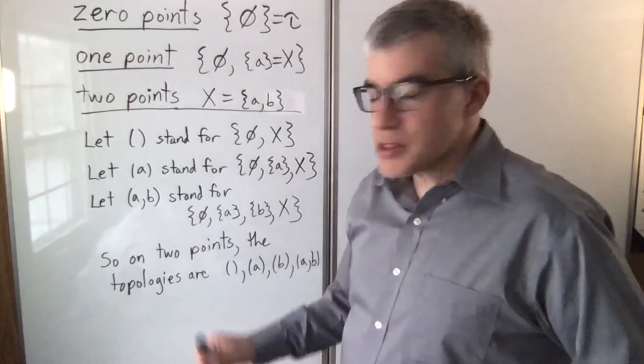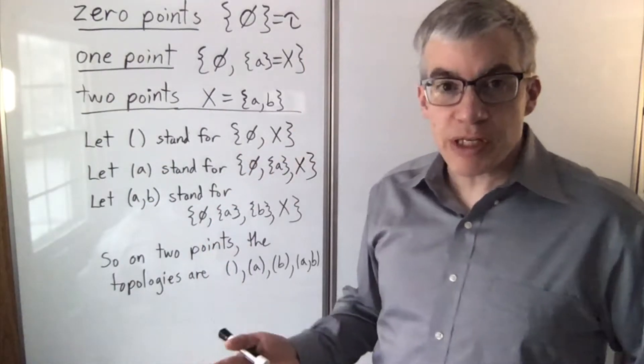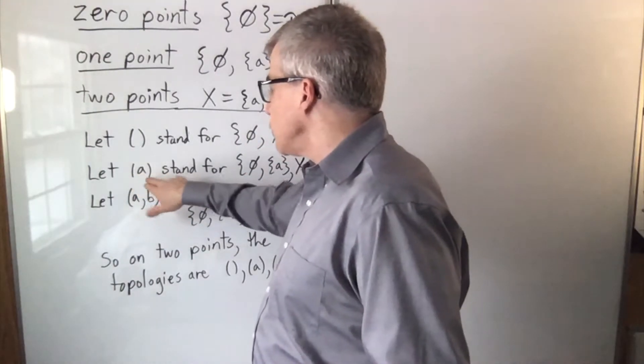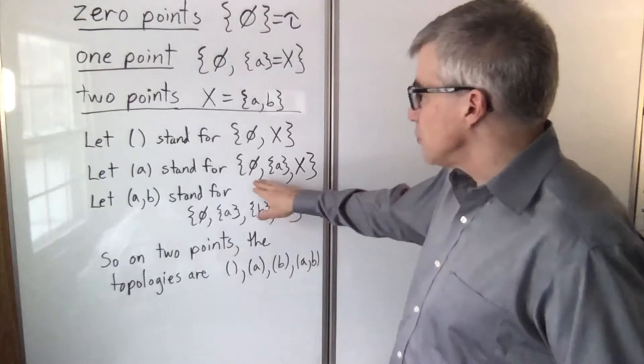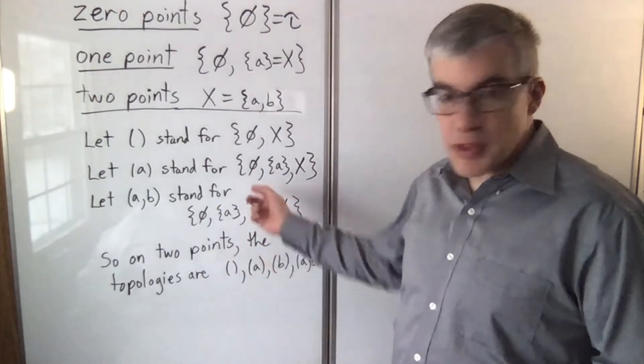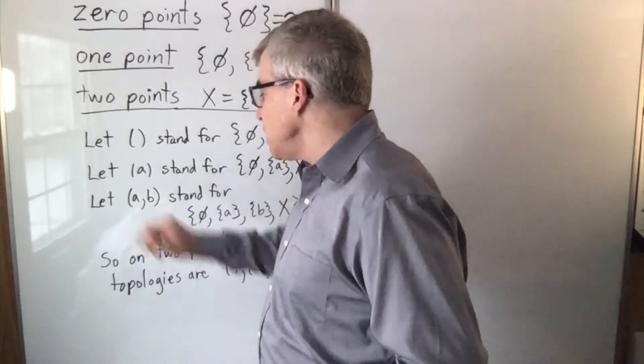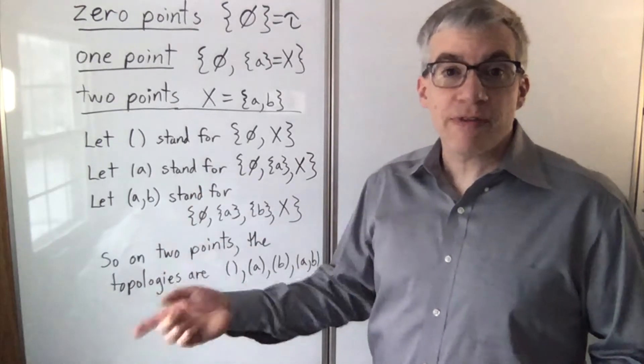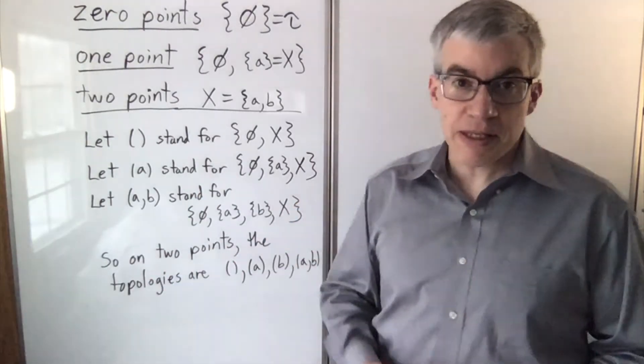Let's have empty parentheses stand for what we call the indiscreet topology. It's got nothing except the bare minimum. If we have just A in parentheses, that stands for you have the subset containing A and nothing else except the bare minimum. If you have A, B, that means you have A and you have B, and therefore you have A union B, but that's also the same thing as the entire space.